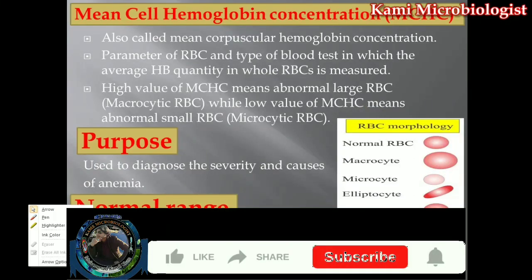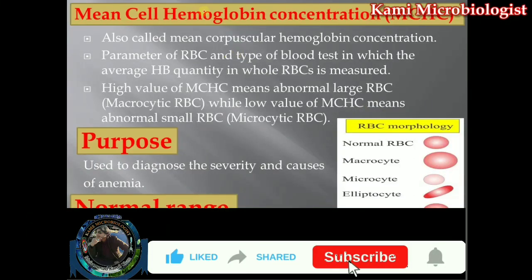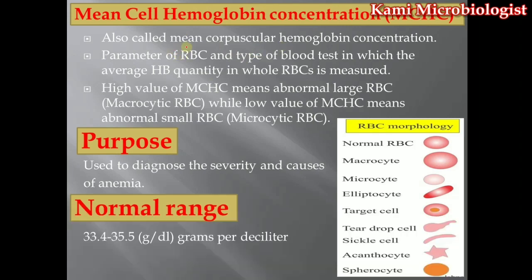Let's talk about the MCHC, which we call Mean Cell Hemoglobin Concentration or Mean Corpuscular Hemoglobin Concentration. It is a parameter of the RBC and a type of blood test in which we check the average hemoglobin quantity in the whole RBC.